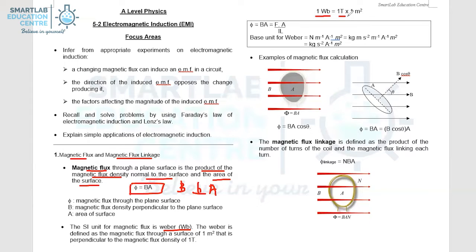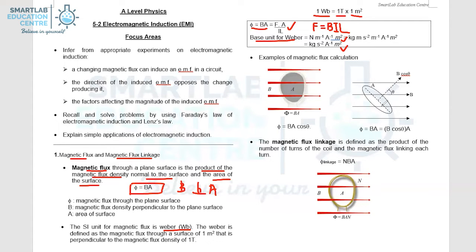One Weber is equal to one tesla multiplied by one meter squared. Let's take a look at the base unit for Weber. In terms of the formula we're using, magnetic flux is equal to BA, and B can be substituted using the formula F = BIL. With this expression, we can now work on the base units and arrive at the answer.